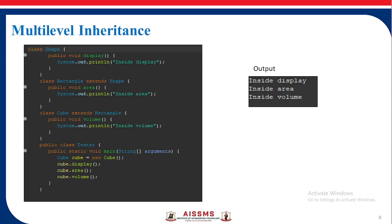Multilevel inheritance example: class Shape has a display() method with the statement 'inside display'. Class Rectangle extends Shape and has an area() method with the statement 'inside area'. Class Cube extends Rectangle and has a volume() method with the statement 'inside volume'. When we create the object of class Cube — Cube cube = new Cube() — calling cube.display() outputs 'inside display', cube.area() outputs 'inside area', and cube.volume() outputs 'inside volume'.